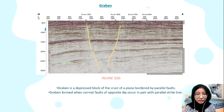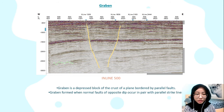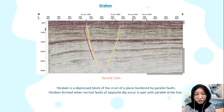The next structural interpretation relates to a Graben, which is a depressed block of crust bounded by parallel faults. We found a Graben at inline 500 in the interpretation window. The Graben is formed when normal faults of opposite dip occur in pairs with parallel strike lines.